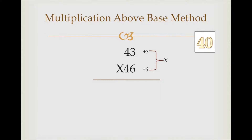Multiply these two digits and we get 18. But we cannot write 18 directly because in base 40 there is only one zero. So we write 8 and carry 1. Now cross check with cross addition whether the results are the same: 43 plus 6 gives 49, and 46 plus 3 also gives 49.